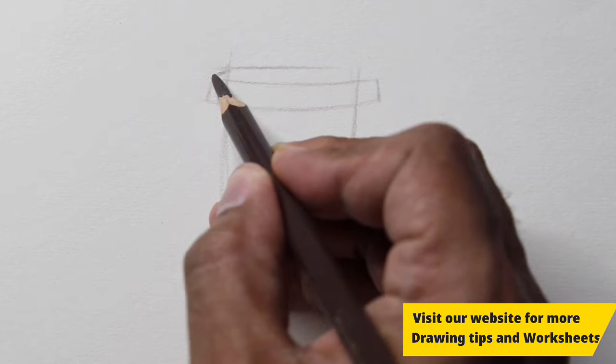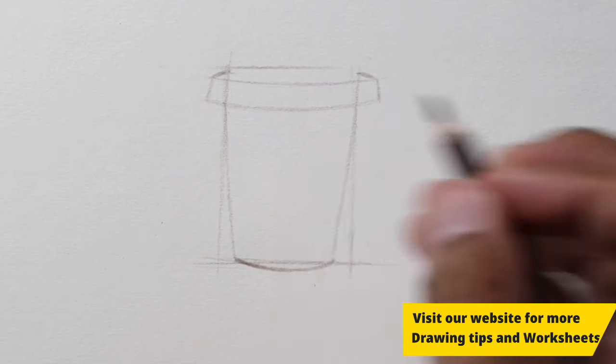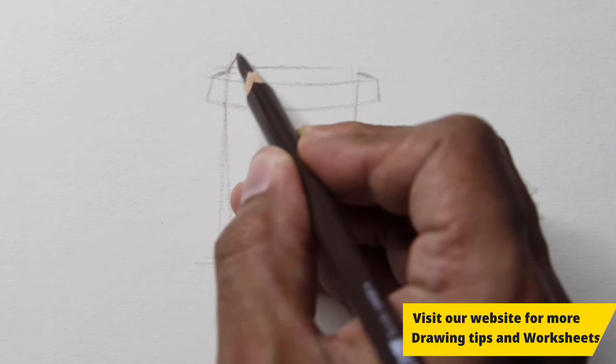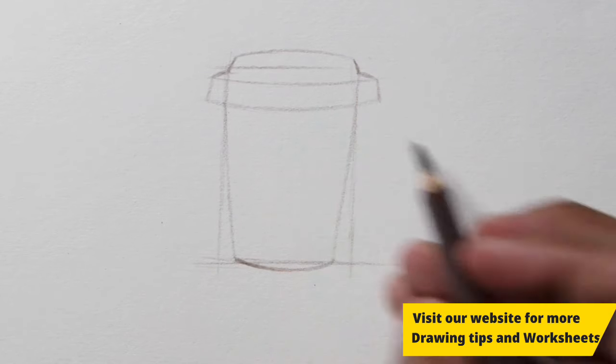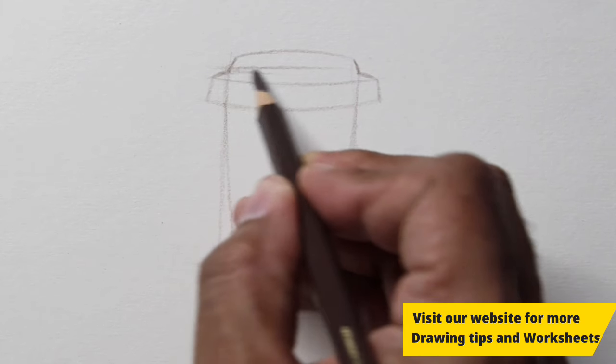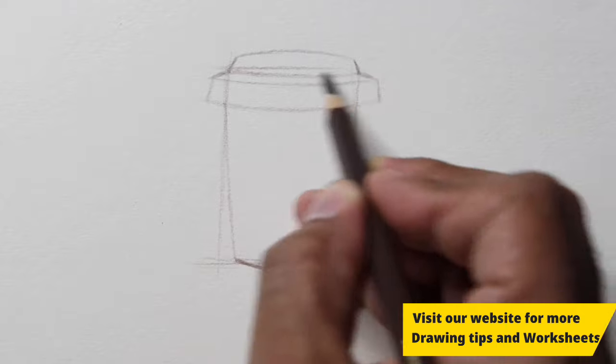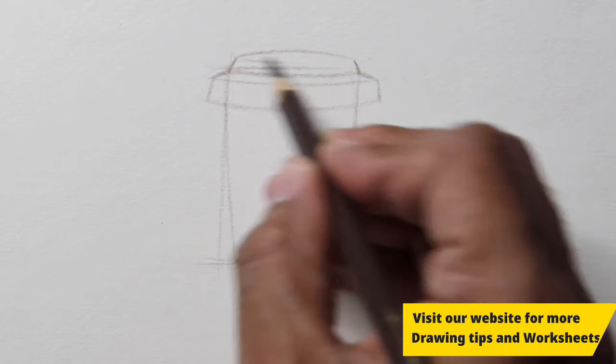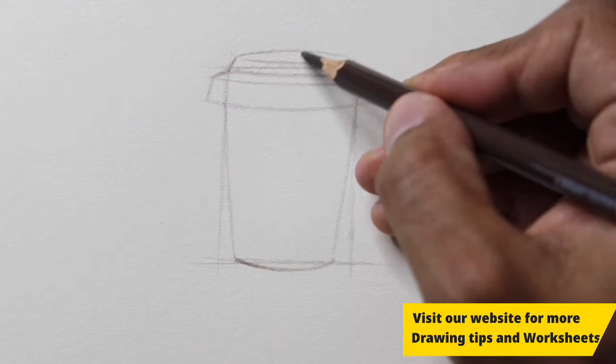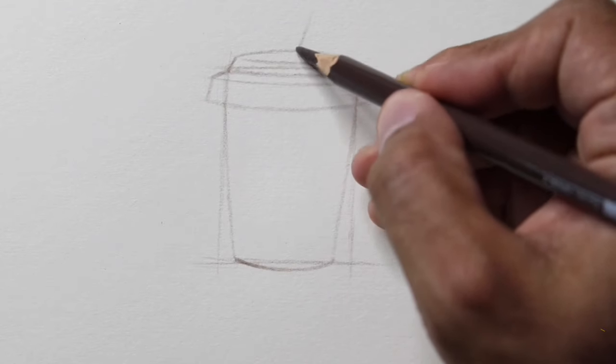Connect the top portion with two small lines. Complete the upper portion of the cup, and then draw a straw sticking out from the top.